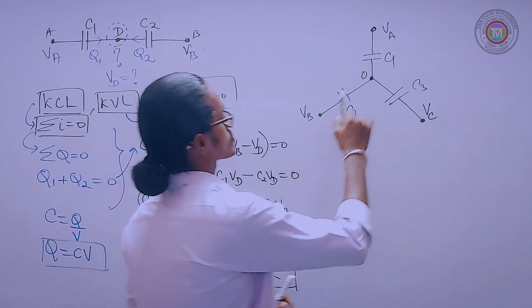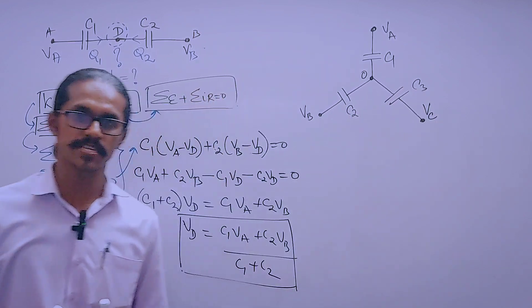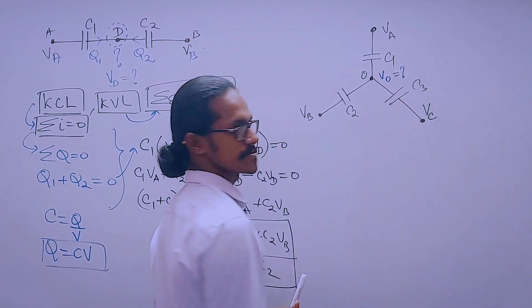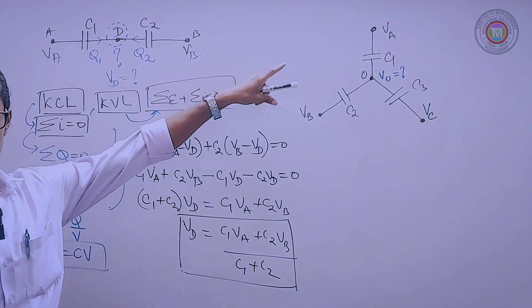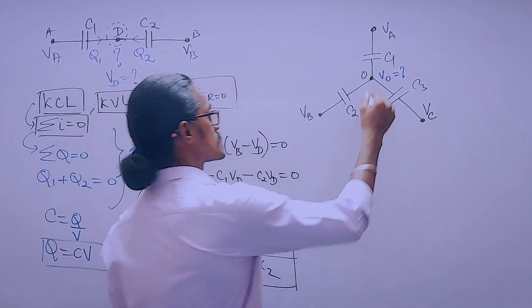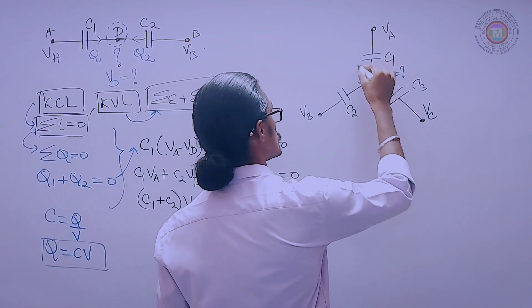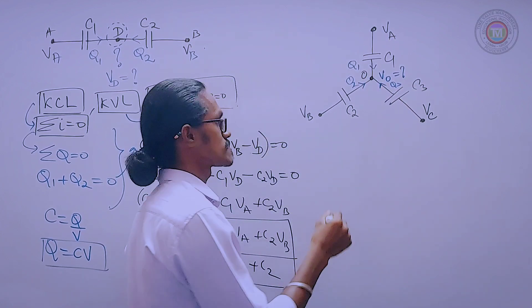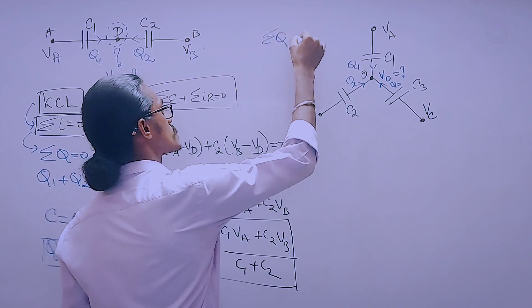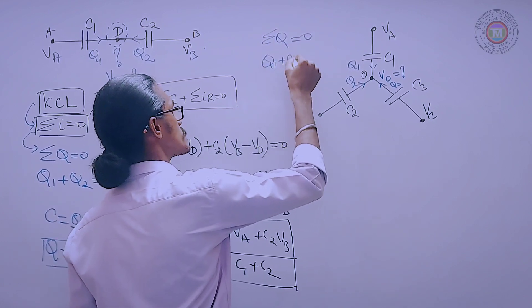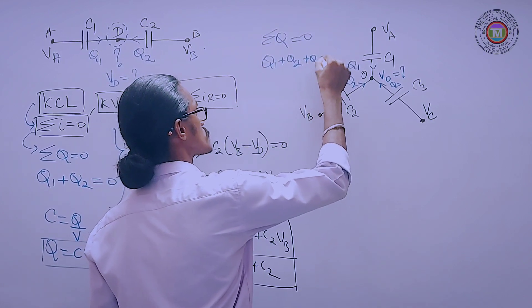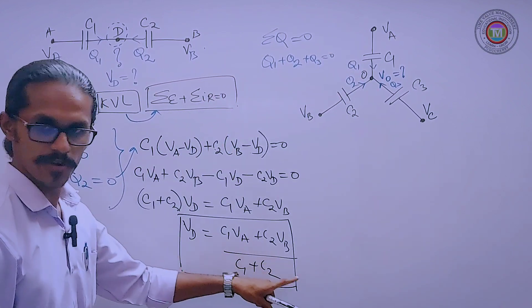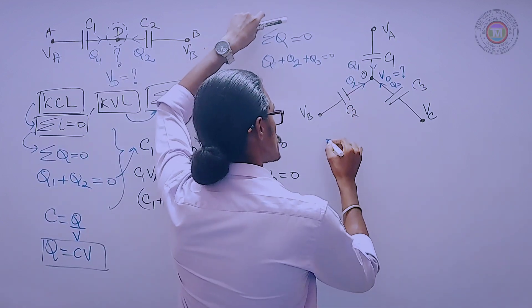So the exact model we have to use this. What is the potential, common potential at this point, V of O? That is the question actually. The same scenario. Sum of the charges is said to be zero. Maybe this is Q1 and this is Q2 and this is Q3. Summation of Q is said to be zero.